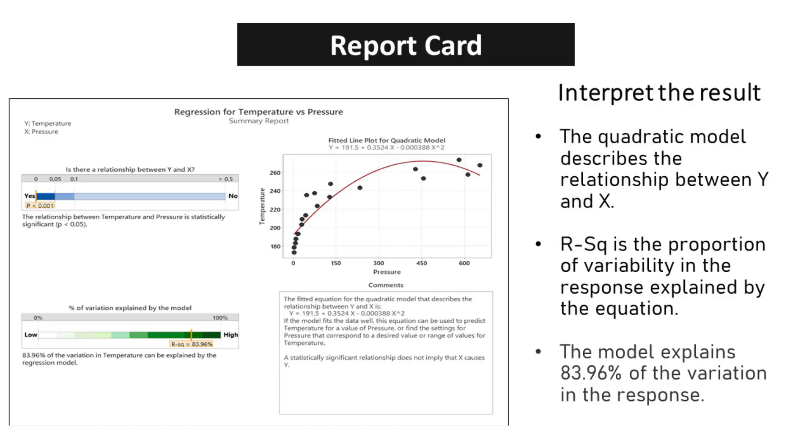One important measure of the effectiveness of the quadratic model is the R-squared value, which represents the proportion of variability in the response explained by the equation. In the case at hand, the model explains an impressive 83.96% of the variation in the response.